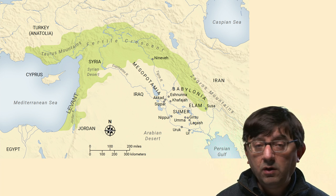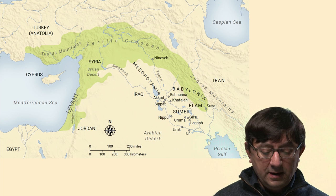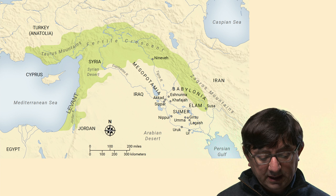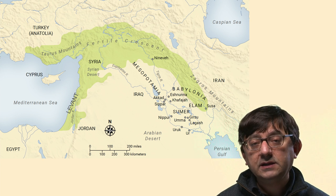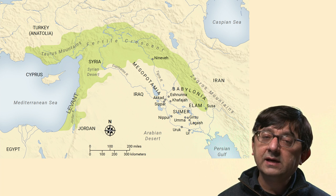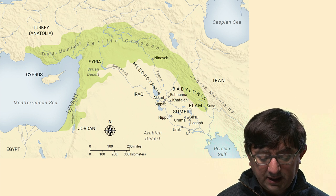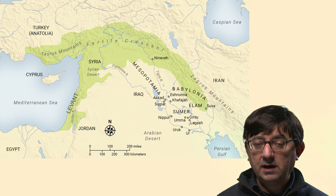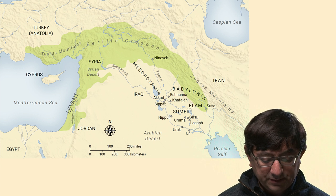Mesopotamia, Syria, Anatolia, the Levantine Coast, Iran — this is the history of the ancient world we're looking at, and this history as we understand it today is very much entangled with the 19th and 20th century historiography that emerges out of these practices.